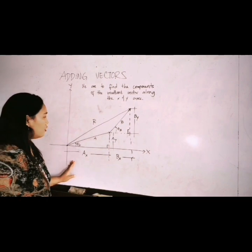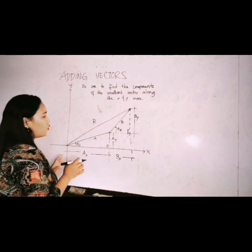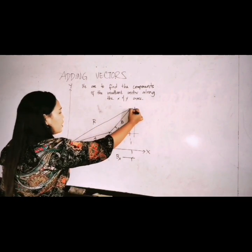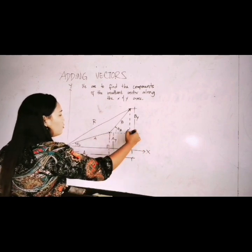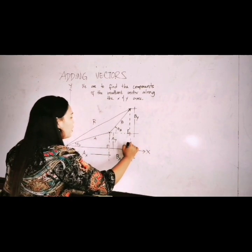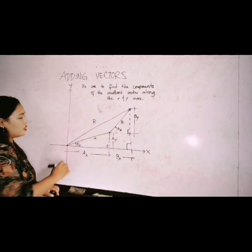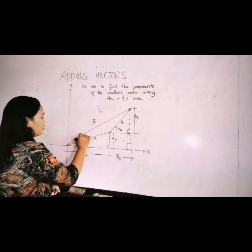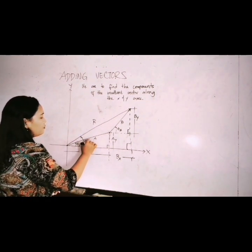Now as you can see, this is the resultant vector. We can see the bigger triangle, which is also a right triangle. So let's say this is the angle. So you have R.